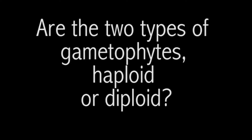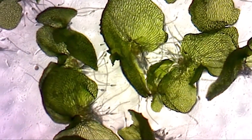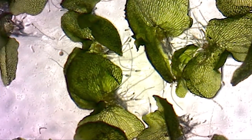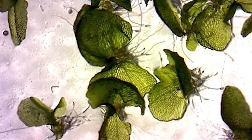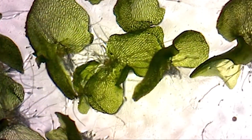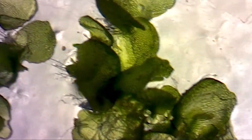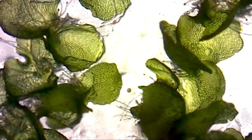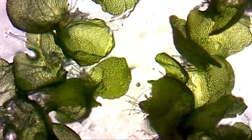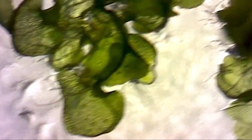Are the gametophytes haploid or diploid? The gametophytes are haploid. Haploid means that the cells contain one full set of chromosomes. We know that the gametophytes are haploid because they were formed from spores, which are created through meiosis. Thus, there is only one set of chromosomes.